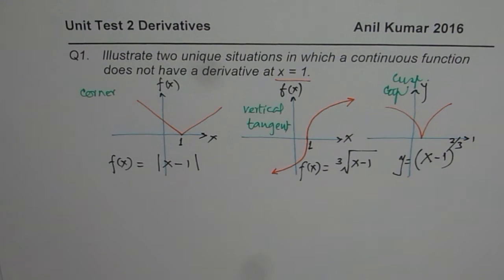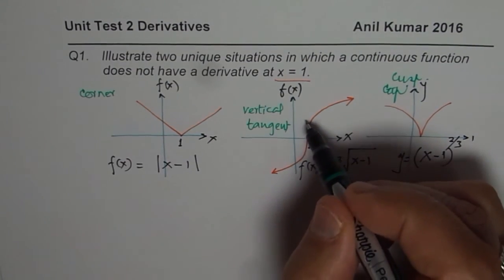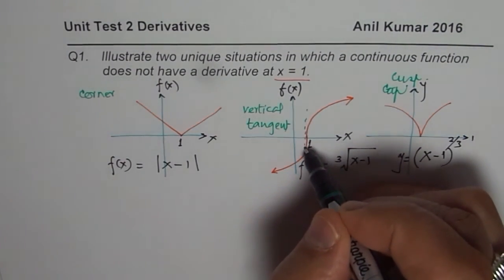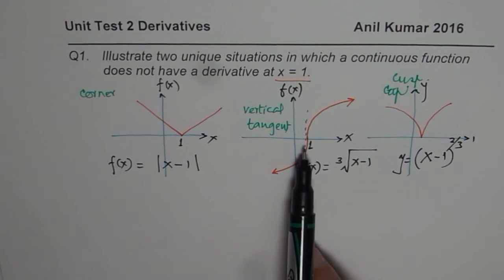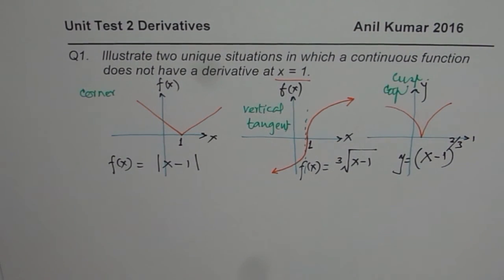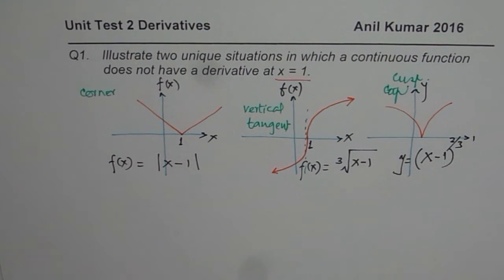Otherwise, if the function is discontinuous, then it will not have derivative since you cannot draw a tangent there. Now here, tangent if you draw, it's vertical. That means it is not defined and that is why here it is not differentiable. I hope that helps.